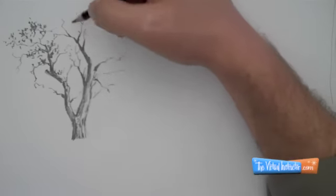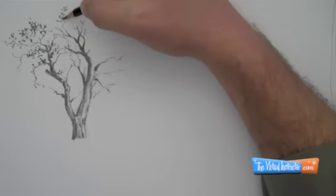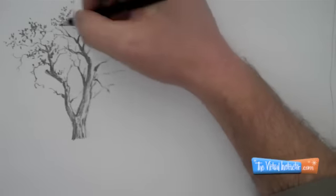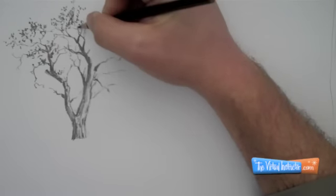I'm a little bit looser than that. I just kind of draw a bunch of little textury lines, and they will translate as leaves because leaves are really just texture on the tree.